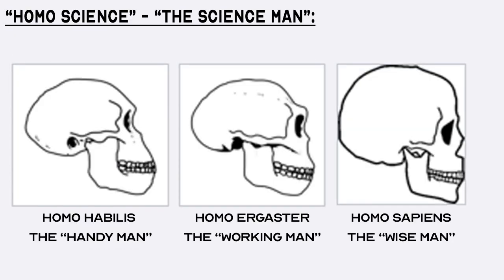From Homo habilis the handyman, to Homo ergaster the working man, to Homo sapiens the wise man, the need to obtain and use knowledge and information about the natural world has been so integral to our survival that we have embedded it into the various names of our species and early human ancestors. We can even be considered Homo science, the science man.